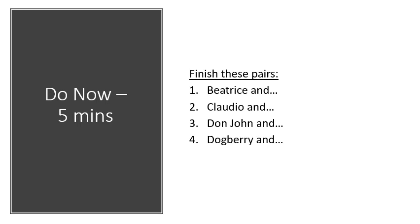Hello Year Nine. You've seen the play, you've done the whoosh — we've done the whoosh — and now we're going to get into the actual nuts and bolts of the play. But before we do that, I want you to do the do-now, which is finish these pairs. They're pairs of people who match up in the play: Beatrice and Claudio, Don John, and Dogberry. Five minutes to do that, then on to the next slide.